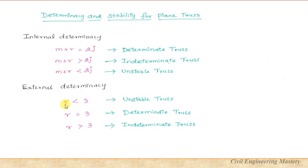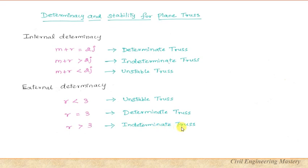If m + r is less than 2j the truss is unstable. If m + r equals 3 — the number of equilibrium equations — the truss is determinate. If m + r is greater than 3, the truss is indeterminate. Now the question is: how do we arrive at the condition m + r = 2j? Let us discuss that in detail.